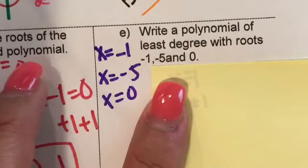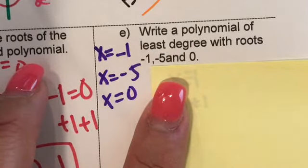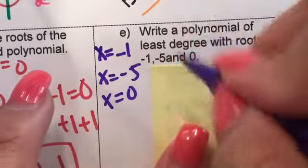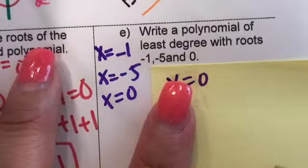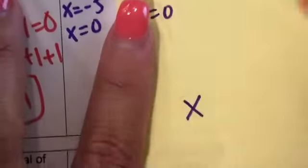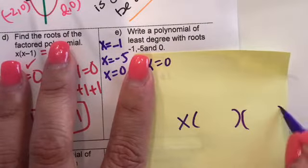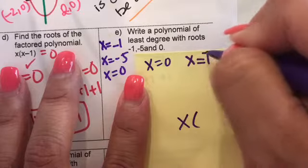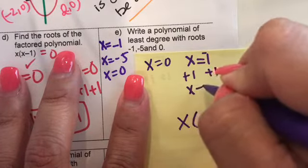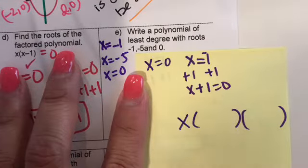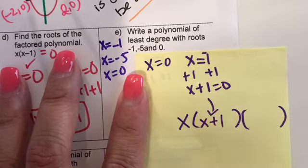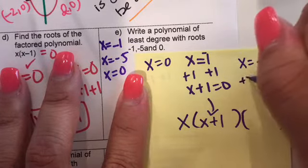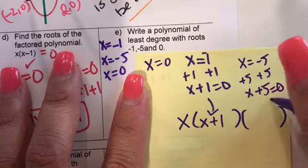This one says: write a polynomial of least degree with zeros negative one, negative five, and zero. So X equals zero, X equals negative one, X equals negative five. The zero root gives us a factor of X. For X equals negative one, add one to both sides: X plus one equals zero. For X equals negative five, add five: X plus five equals zero. So the factored polynomial is P of X equals X times X plus one times X plus five.